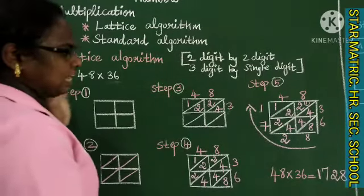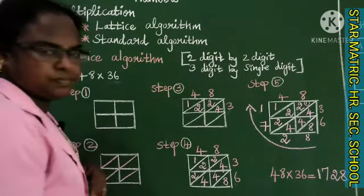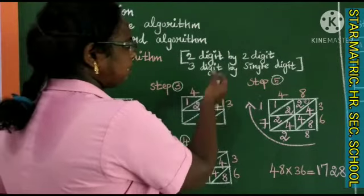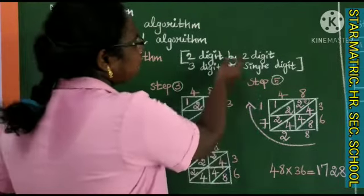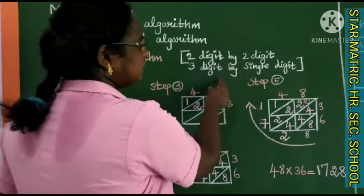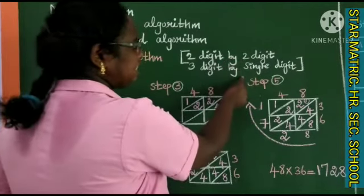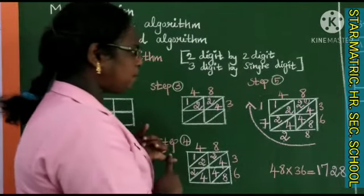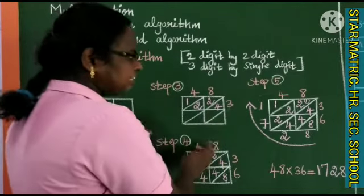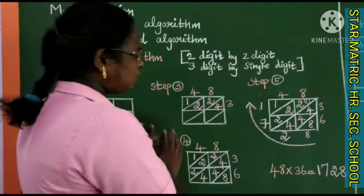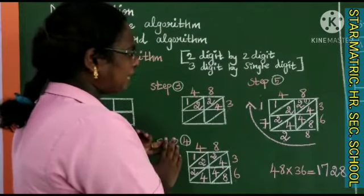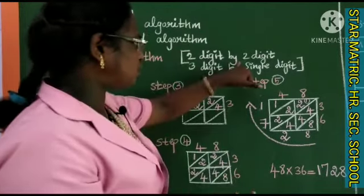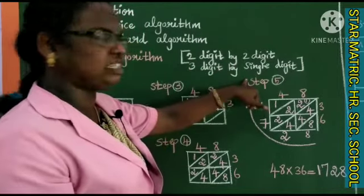This is the lattice algorithm method. Using this method, we can find the product of a 2-digit number by a 2-digit number, or a 3-digit number by a single digit. However, 3-digit by 2-digit problems go beyond what the lattice method easily handles.